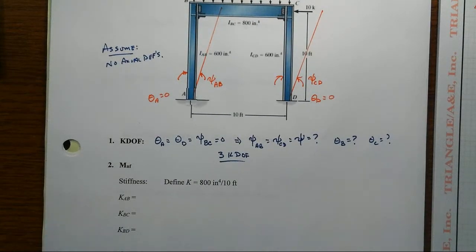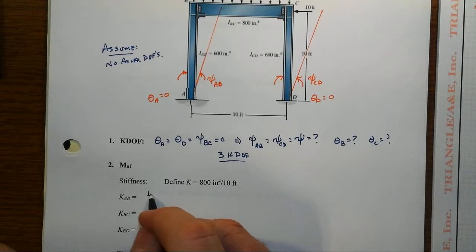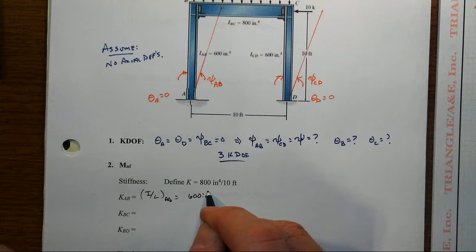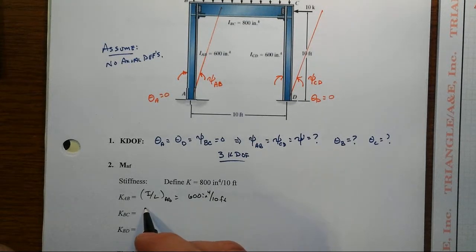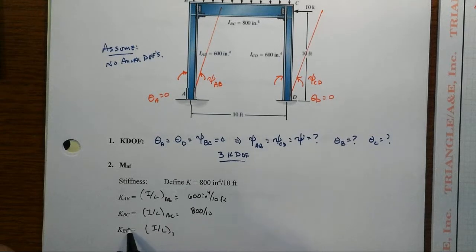So then next we write the slope deflection equation for each and every member. The MNF equations of course are stiffness values, K values here are the I over the L of the member. So that's 600 inches to the fourth over 10 feet for the left column. For the beam, we have an I over L of 800 over the 10 feet. And then we have, of course, the other column being the same as the first one, which is not BD, that is CD.